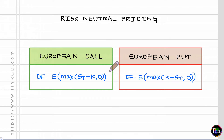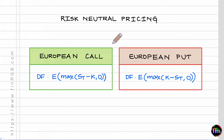For this task, there are many different lines of reasoning that can be used. What we will be doing is using the risk-neutral pricing framework to explain why C and P behave the way they do with respect to changes in R. Risk-neutral pricing tells us that to find the fair value of any given derivative, we need to find the expected value of the payoff of this derivative in the risk-neutral world, and then discount this expected value to today using the risk-free rate of interest.